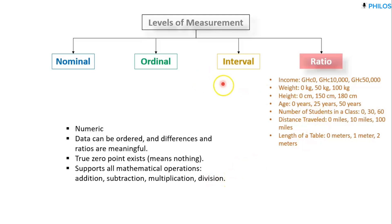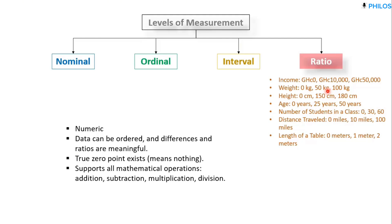Another characteristic is that ratio level supports all mathematical operations: addition, subtraction, multiplication, and division. Recall that interval only supports addition and subtraction, while nominal and ordinal do not support any arithmetic operations. For ratio, all arithmetic operations are supported. So if person A earns 15,000 cedis and person B earns 30,000 cedis, you can say person B earns twice as much as person A. Likewise, if something weighs 100 kg and another weighs 50 kg, you can say the heavier one is twice as heavy. Income, profits, wages, salaries, weight, height, length, and distance are all under ratio level of measurement.